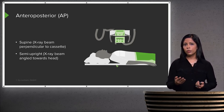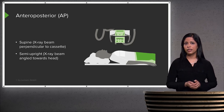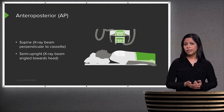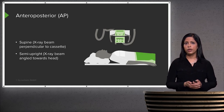The AP view is usually performed in patients that aren't able to stand upright — patients that are supine or possibly semi-upright are the ones that undergo an anteroposterior film.